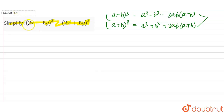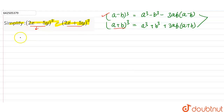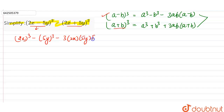The question is (2x minus 5y) whole cube minus (2x plus 5y) whole cube. For the first part, we use the first identity on (2x minus 5y) whole cube. This equals (2x) whole cube minus (5y) whole cube minus 3 into 2x into 5y into (2x minus 5y).